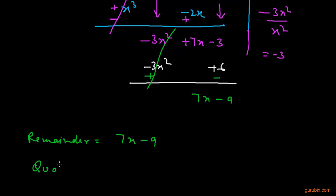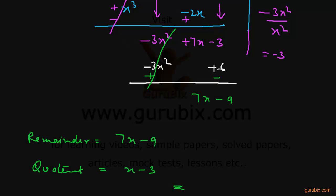The quotient is x minus 3 and the remainder is 7x minus 9. This is the solution of part 1. Thank you.